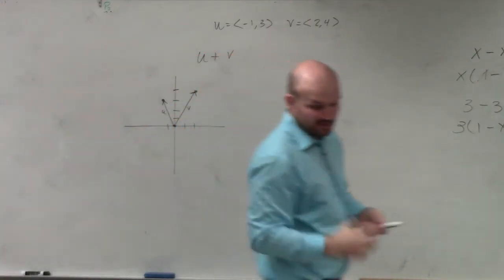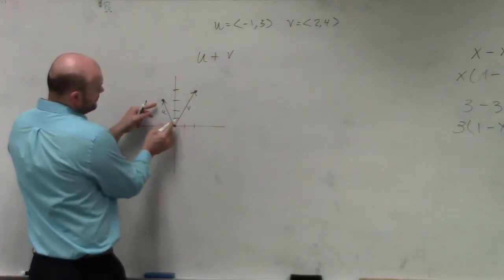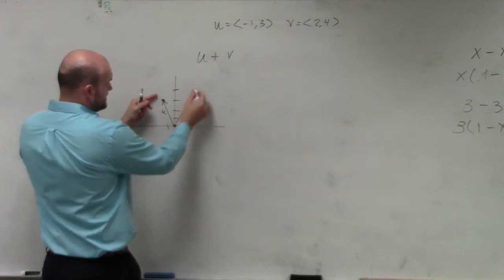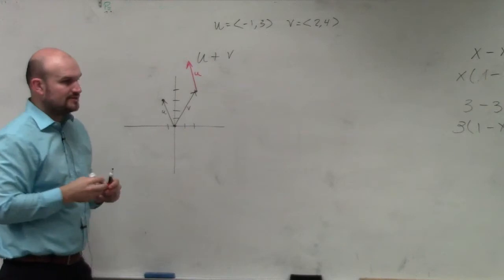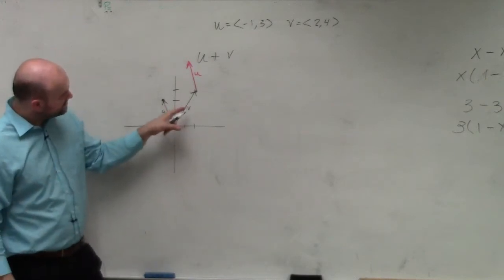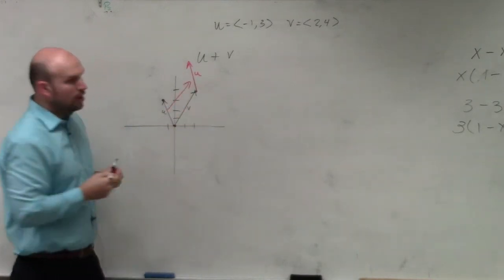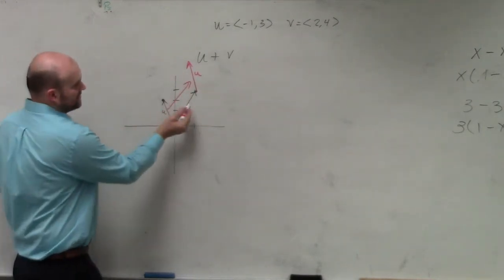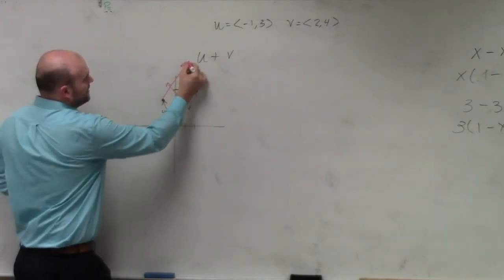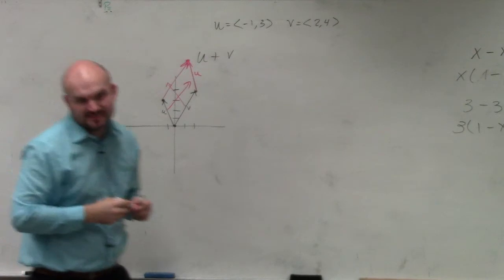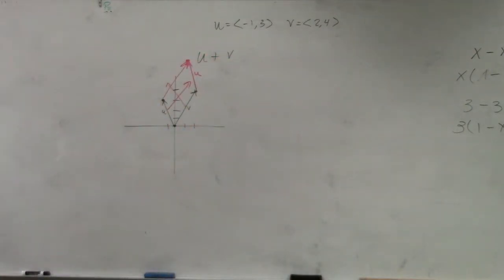So if I'm simply going to add them, basically what we're doing is just sliding u plus v. We're sliding u over there. So basically, we're just sliding this vector over. Or you could do the same thing - you could also think of v being slid over this way. But either way, it takes you to the exact same point, same vector, which we call our resultant vector.